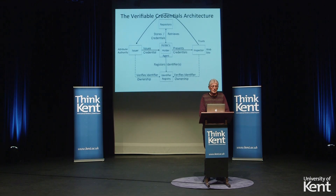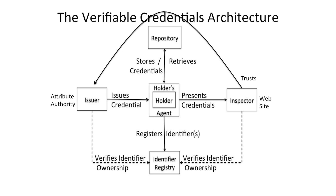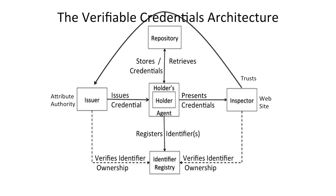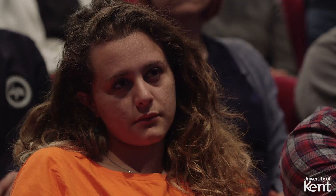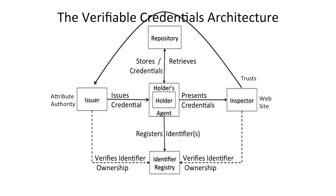This work has been carried out by the W3C Verifiable Credentials Community Group, of which I've been a member. Here is the model: on the left-hand side is the issuer — the attribute authority that gives people credentials saying they're a student at Kent, a Visa card holder, or entitled to a rail card discount. In the middle is the holder — that's you — with software that stores credentials in a repository, registers a unique identifier for you in a registry, and interfaces with the system. The website's inspector code verifies credentials, checks the digital signature, and confirms the information comes from a trusted source.